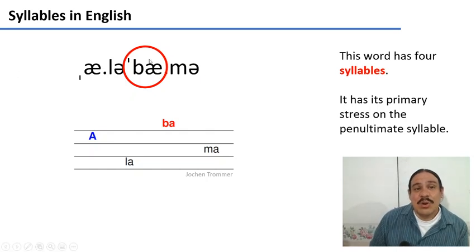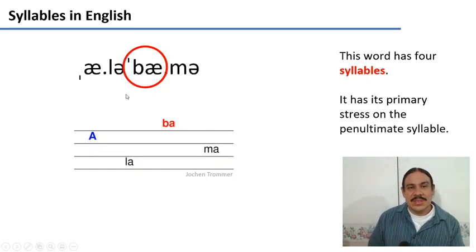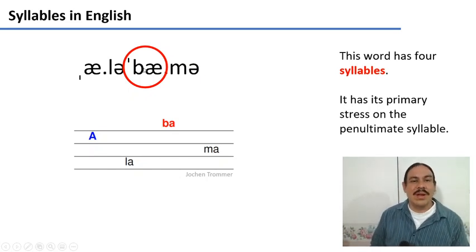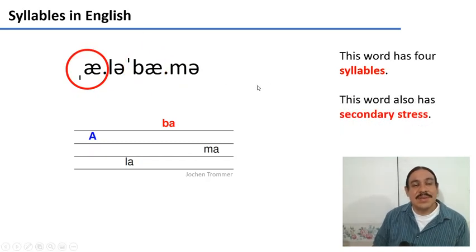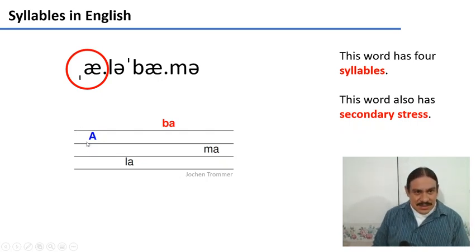By the way, a quick reminder, words in English have stress and stress is really a property of syllables. So in this word, Alabama, the stress syllable is the penultimate syllable, the one that's before the last one. Alabama. If an English word is long enough, four syllables or more, it's also going to have something called secondary stress, which we indicate with this little stroke here, before the syllable with the secondary stress. So this syllable also has an increase in prominence, but not as much as the one with the primary stress.